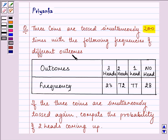with the following frequency of different outcomes. Now these are the outcomes and this is the frequency.